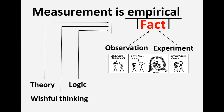Keep in mind that subjectivity doesn't only apply to us, the program implementers. There is also a difference between our beneficiaries' perceptions and information based on facts, which would be objectively verifiable. You should keep this in mind when measuring something. For example, you may come up with very different answers when you ask people if they think they have learned something versus when you actually test them on that knowledge or skill.